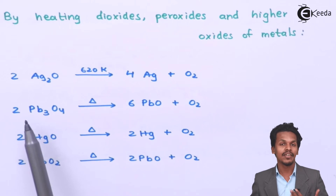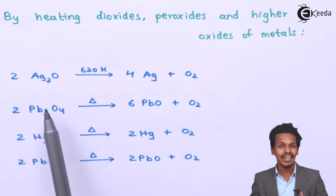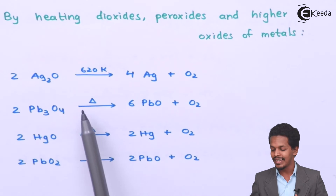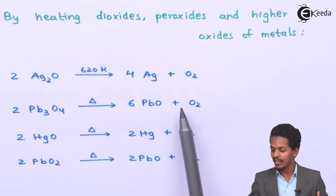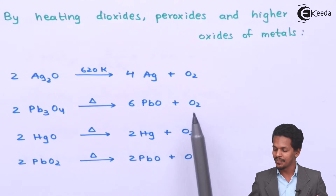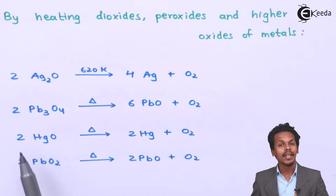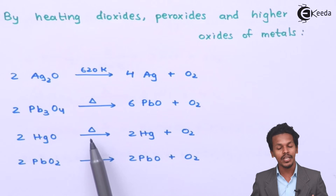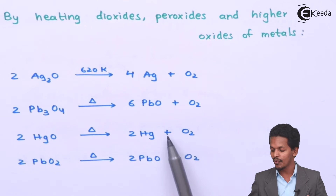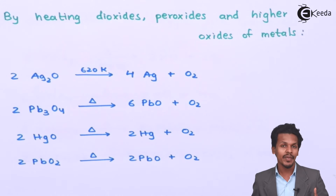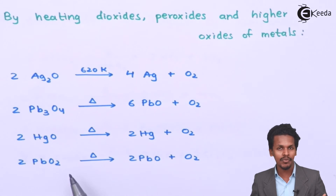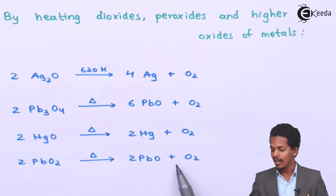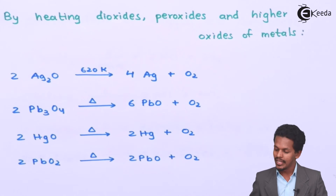For example, Pb3O4, known as red lead: when 2 moles of red lead undergo decomposition, it forms PbO, lead oxide, along with O2. Mercury oxide on decomposition forms 2 moles of mercury along with oxygen as a byproduct. Lead dioxide also undergoes decomposition to give lead oxide along with O2 as a byproduct.